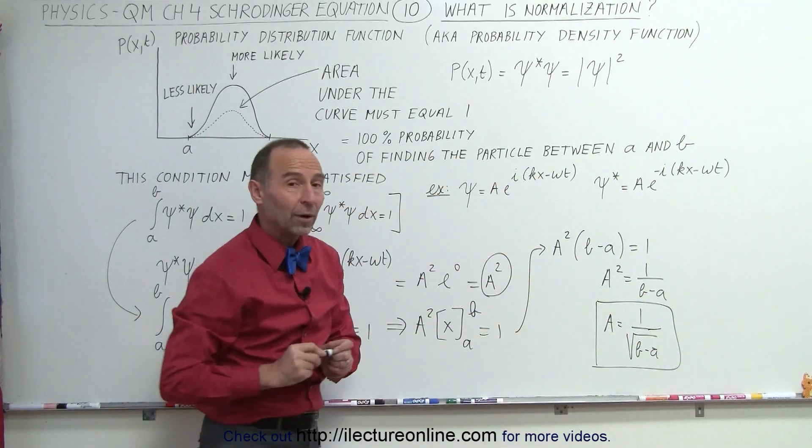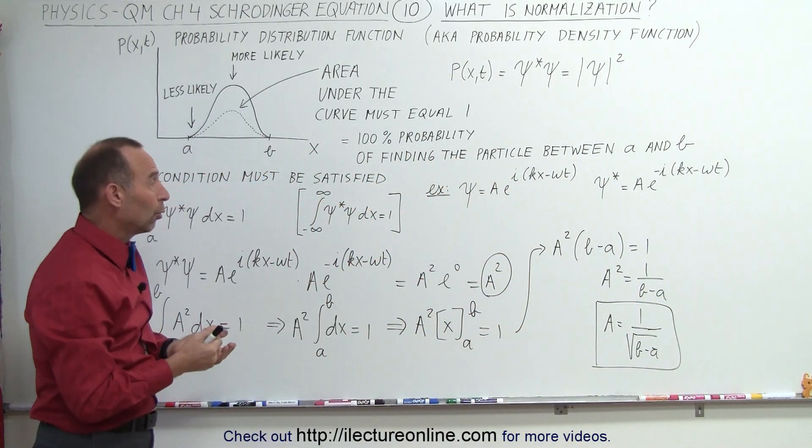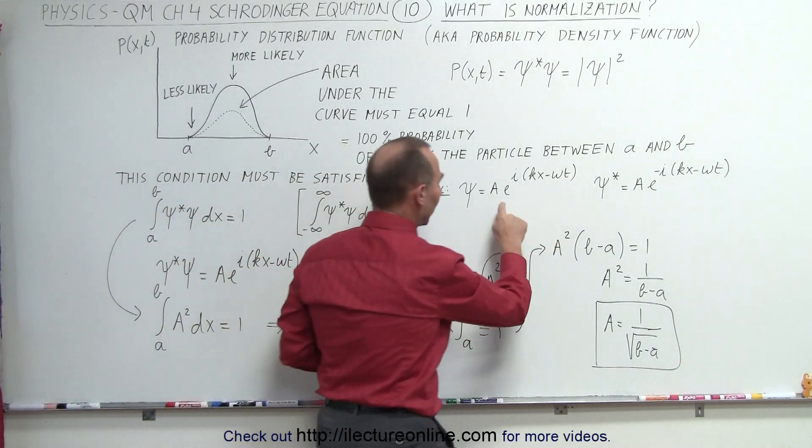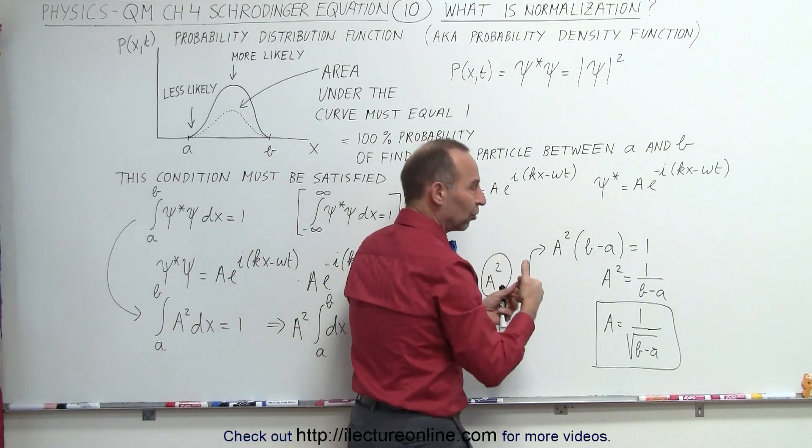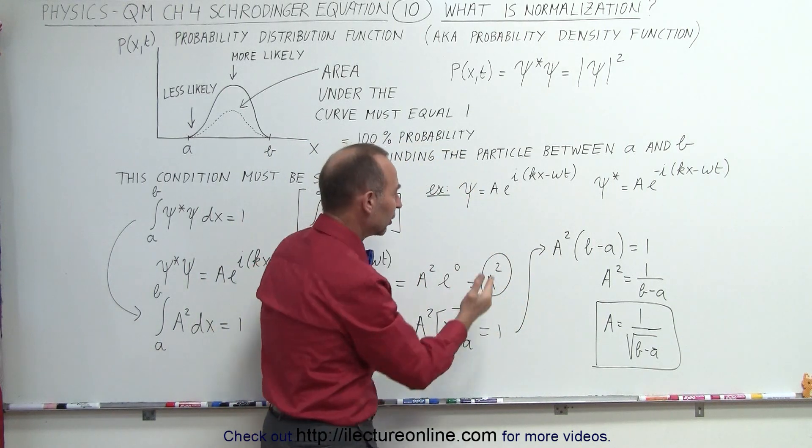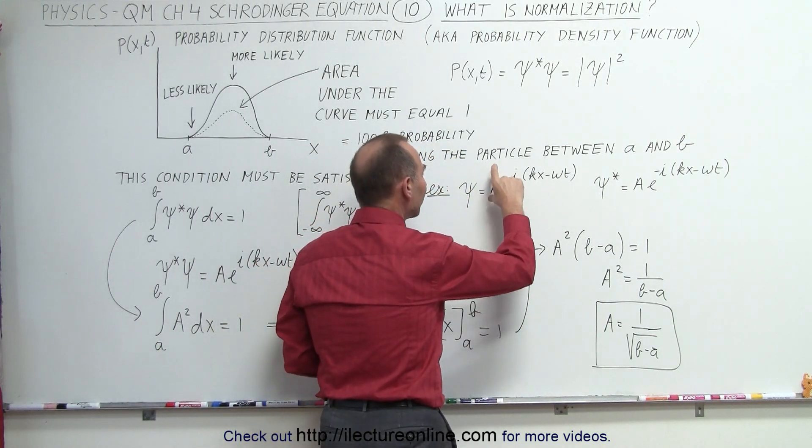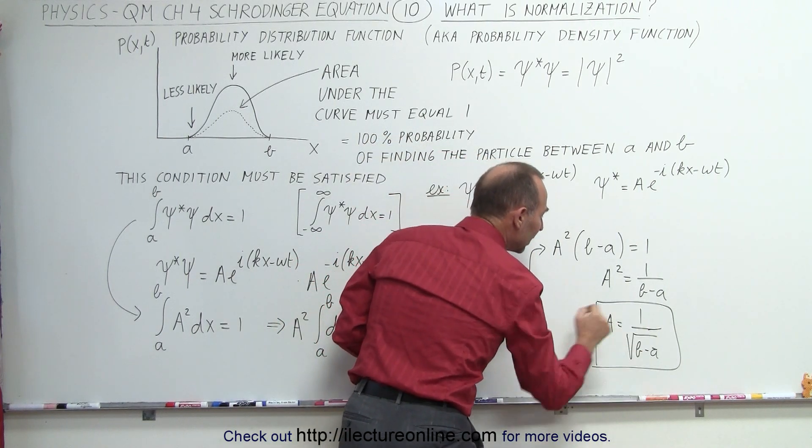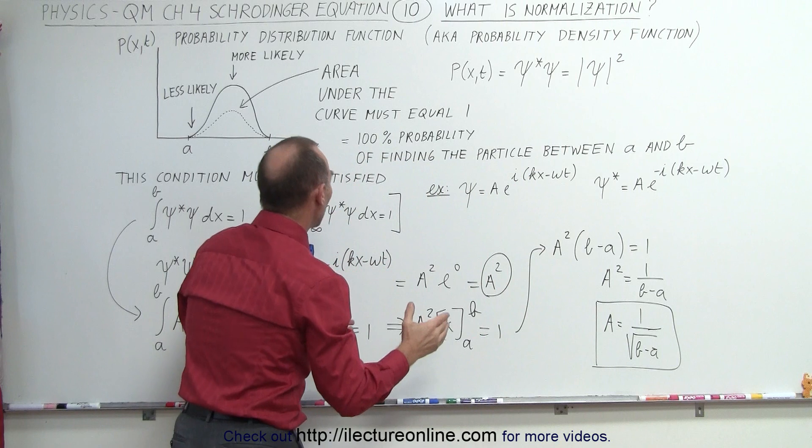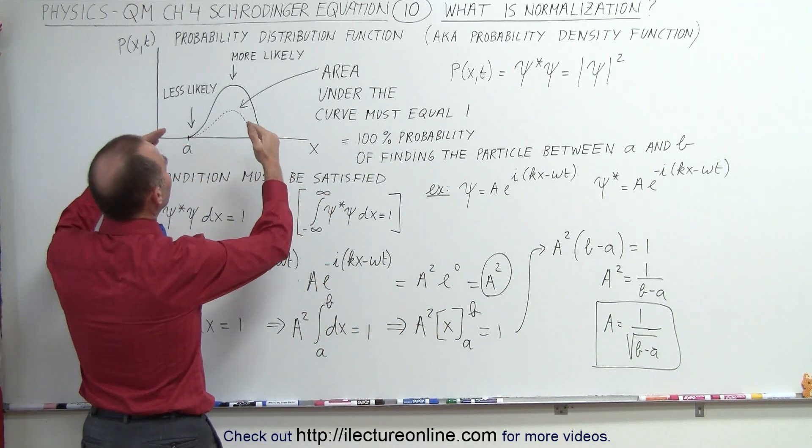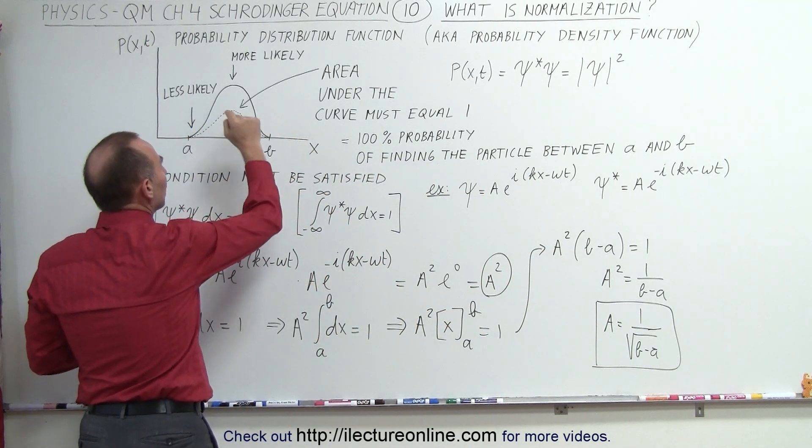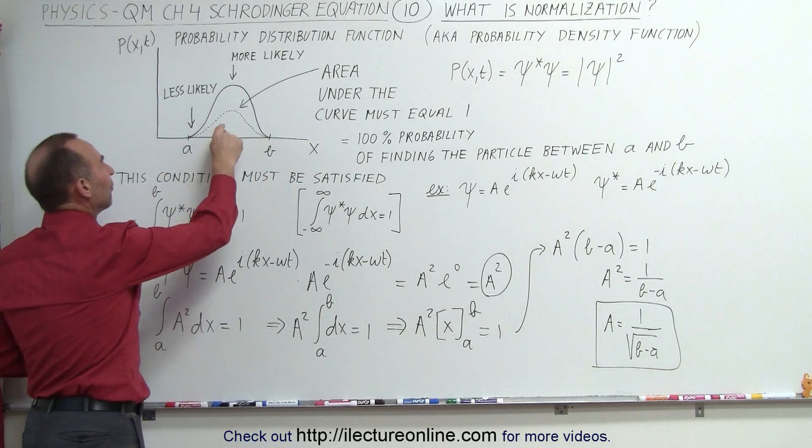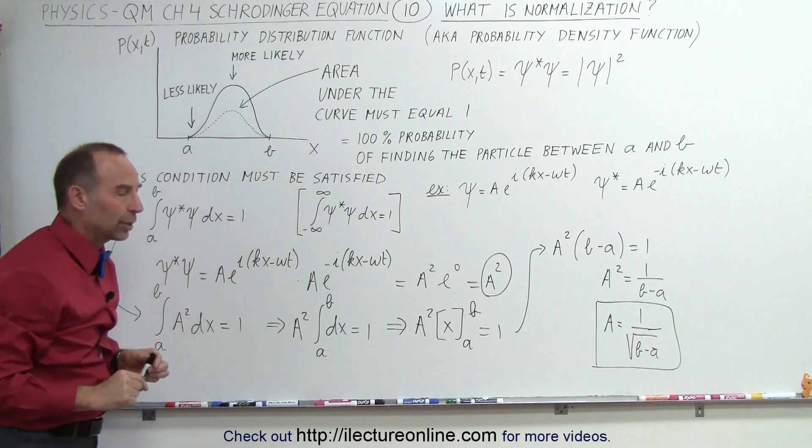Now you can see that when you try to normalize a wave function, what you're trying to do is find the proper value of the constant in front of the wave function. Right here, the a, this constant, you'll see that a lot in a lot of wave functions, they'll all come with a constant. We have to find the correct value of that constant, in this case one over the square root of b minus a, so that when we go ahead and find the probability density, the area under the curve will be equal to one, and it actually will represent the real probability of finding a particle at a particular location.